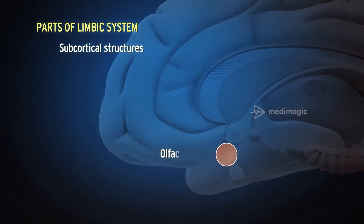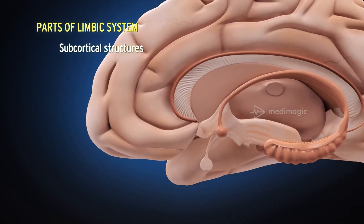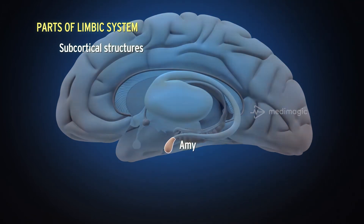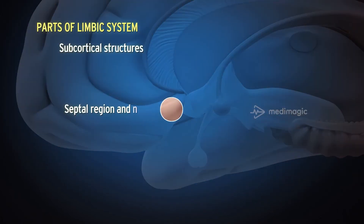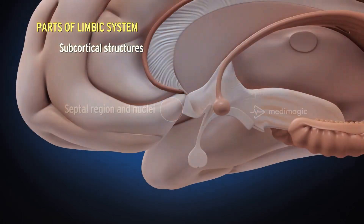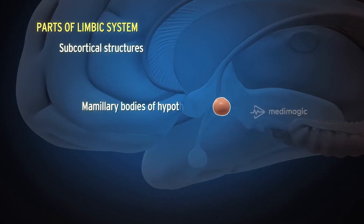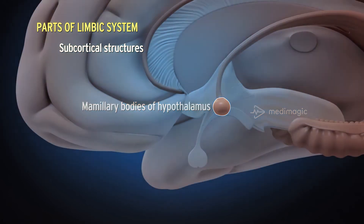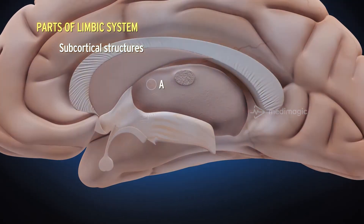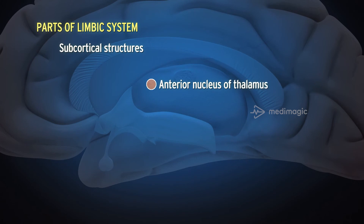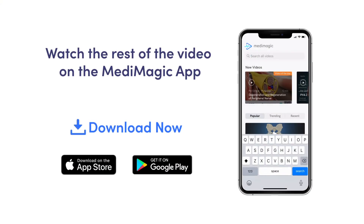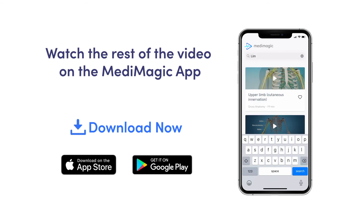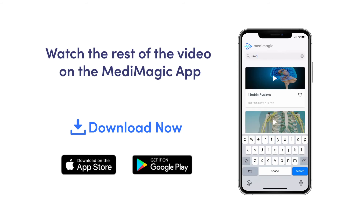Subcortical structures of the limbic system include the olfactory area, amygdaloid body, septal region and nuclei, mammillary bodies of the hypothalamus, and the anterior nucleus of the thalamus.